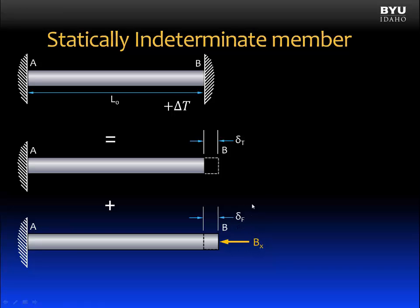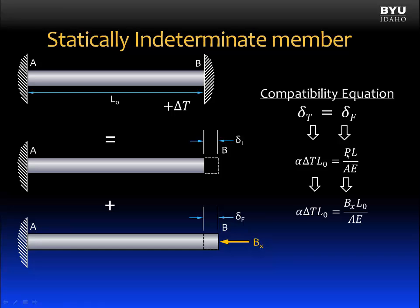And what can we say about δ_F and δ_T? Well, that is a compatibility equation. We can say δ_T is equal to δ_F. If we apply our equations for δ_T and δ_F, we get this expression here. α ΔT times L-naught is the equation for thermal deflection. PL over AE is the equation for deflection due to an internal force. We can replace the value for P with this internal force B_x. L is the original length L-naught. Now we only have one unknown in this problem, it would be B_x, and we could solve for it directly.